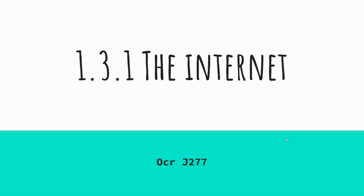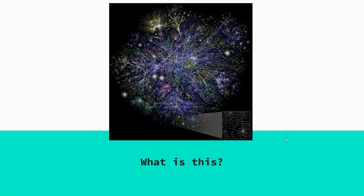Today we're going to be looking at the internet. For a starter activity, I want you to have a look at this picture and see what you think it is. This image is a representation of the internet and all of its connections that exist. You can see some of the denser clusters, which you might consider to be major cities or major populations of people connected to networks, and you can see how every device connects and communicates around the internet.